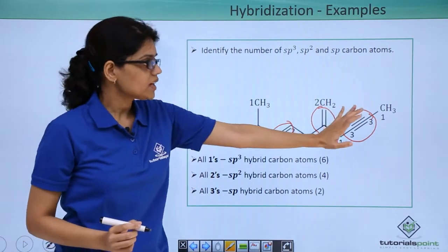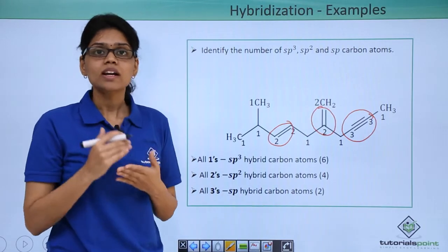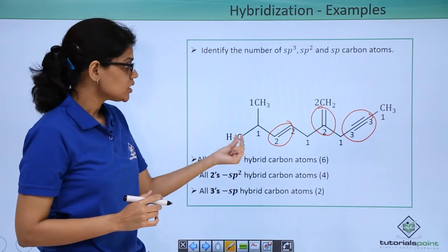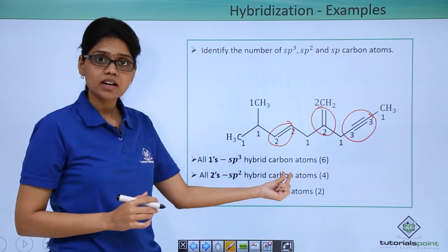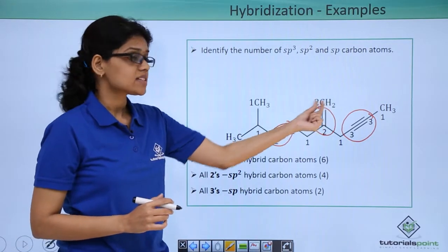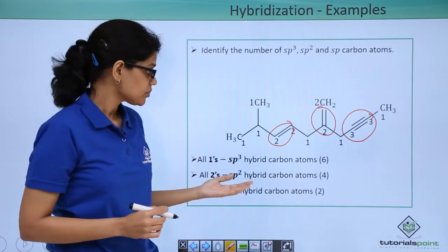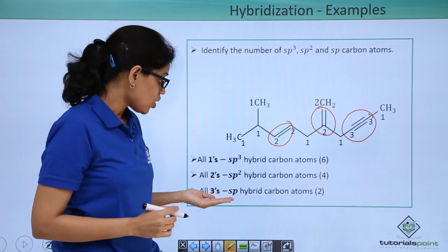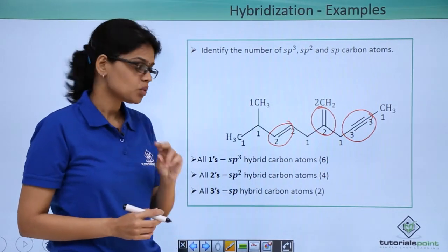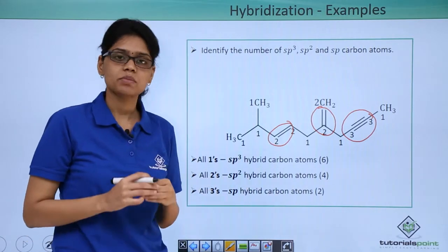If you look at the remaining carbon atoms we can see that they are all sp3 hybrid states. So to conclude we can see that all the 1s here are sp3 hybrid carbon atoms and there are 6. All the 2s involved are sp2 hybrid atoms that is double bond involved which are 4. And all the 3s involved here are sp hybrid atoms which are 2.